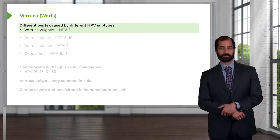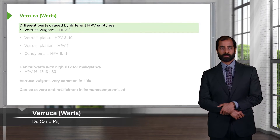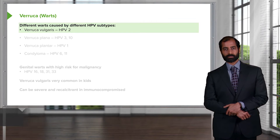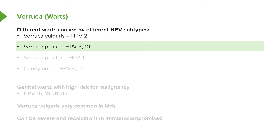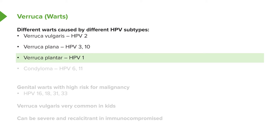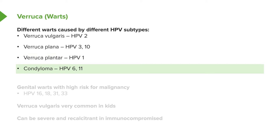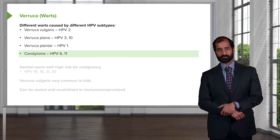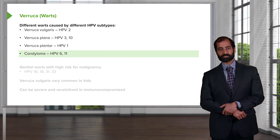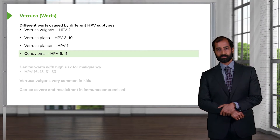Our topic here is verruca — you know this as warts. With warts, you should be thinking about the virus HPV. We have verruca vulgaris, HPV2; verruca plana, which is HPV3 and 10; HPV1, such as verruca plantaris; and if it's condyloma acuminata, that refers to the low strain HPV6 and 11. All these HPVs shown here are low strain, and each one gives you a different type of wart presentation.